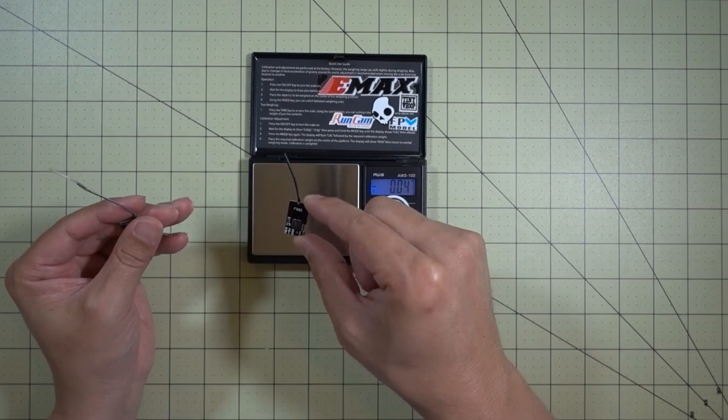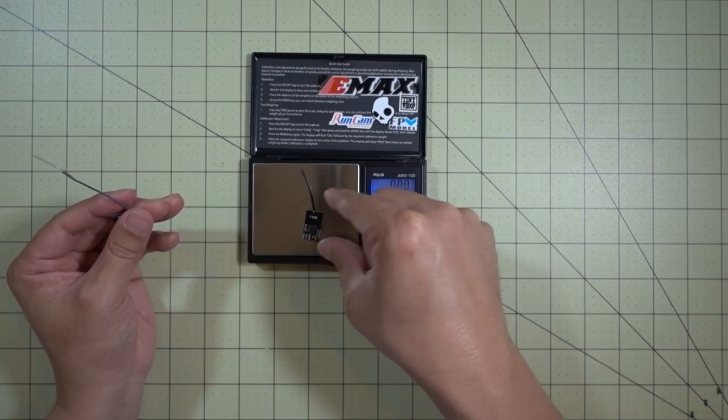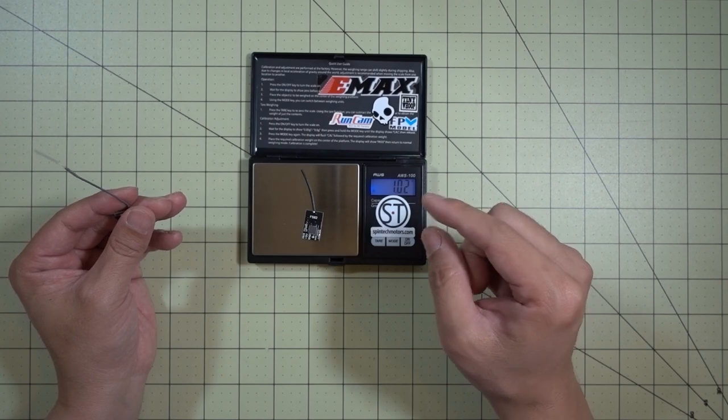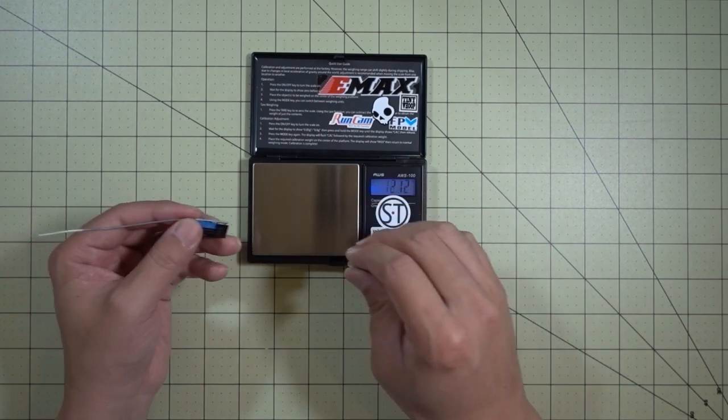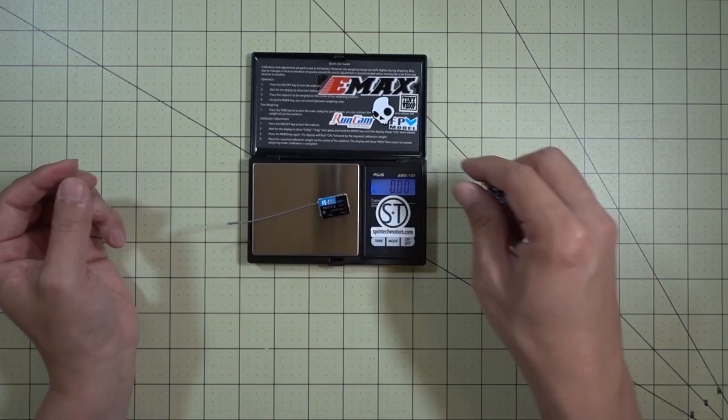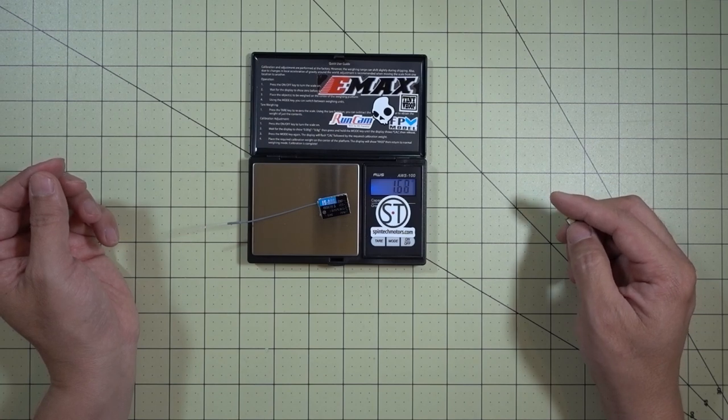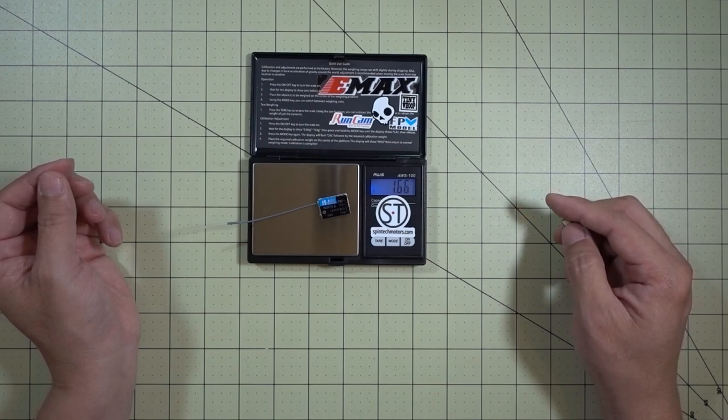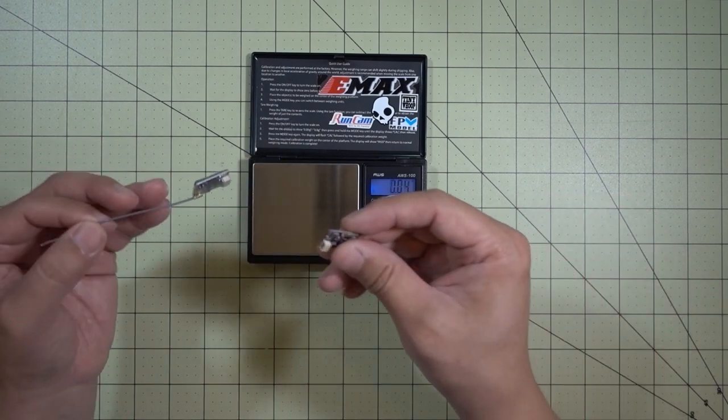I think this one here, the FS-A8S just by itself is about a gram, just a little over a gram. And then the FS-A8S is about 1.6, almost 1.7 grams. So you do save a little bit of weight on this.